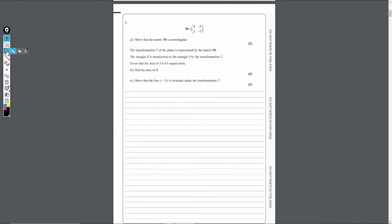So question 1 is a question regarding matrices. Part A here, we have to show that the matrix M is non-singular. So for part A, remember if a matrix is non-singular, what that means is that the determinant, so the determinant of M in this case, is non-zero, so it's not equal to zero. Non-singular means the determinant of M, we have to show that it's not equal to zero.